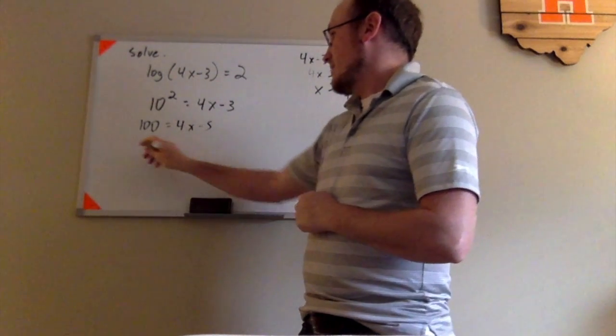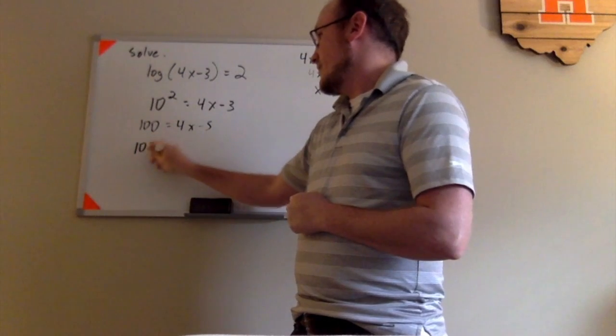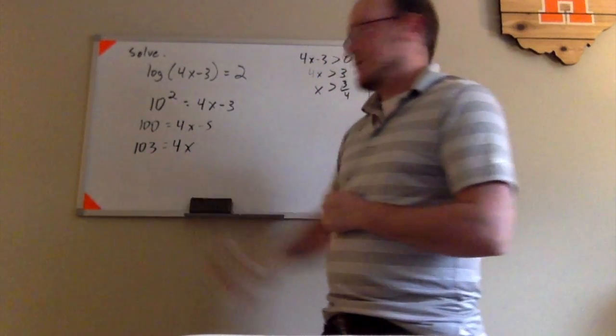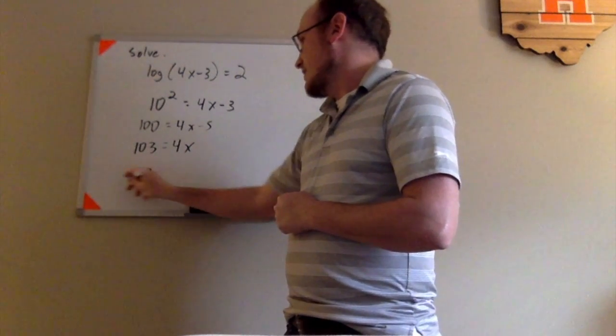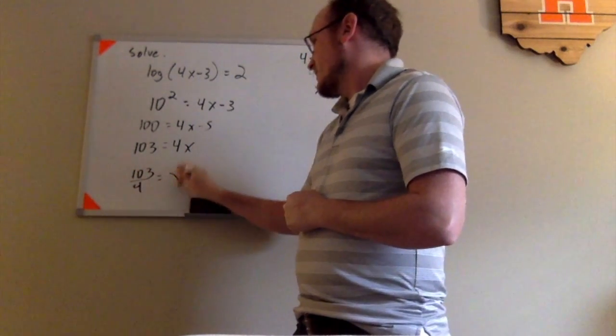First thing I need to do is add 3 on both sides. That will give me 103 equals 4x. And then finally divide both sides by 4 to get 103/4 is equal to x.